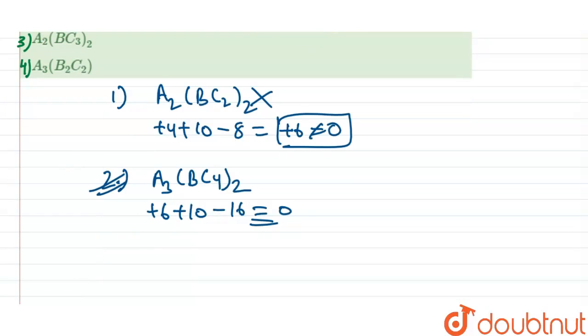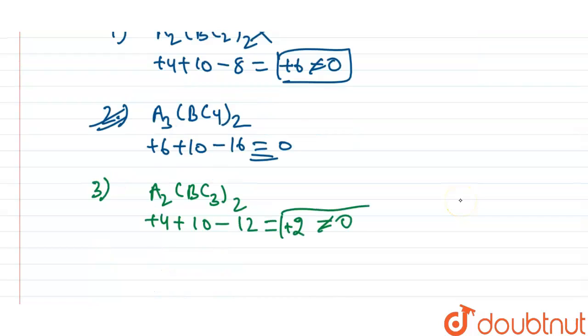Now in the third option, A2(BC3)2. Here A is 2, so 2 times 2 is 4, that is plus 4, plus B also 2, so 5 times 2 is 10. So 10 minus, here C is 6, that is 3 times 2 is 6, so minus 2 times 6 minus 12 is equal to 10, 4, 14 minus 12, that is plus 2, which is also not equal to 0. So this option is also incorrect.